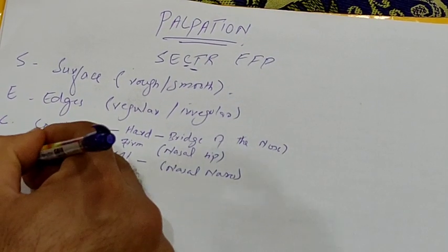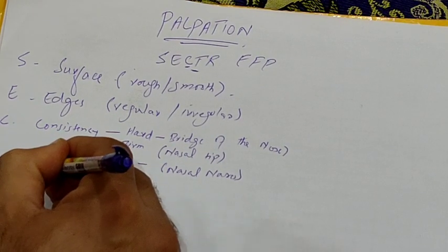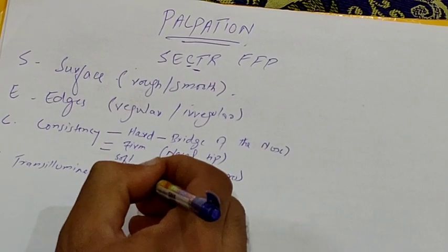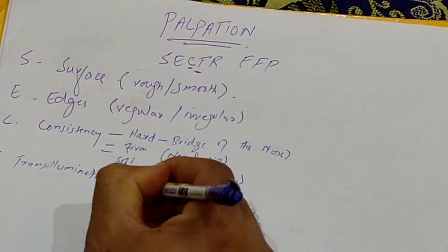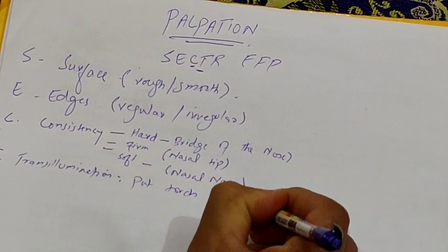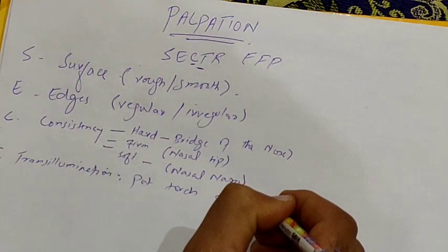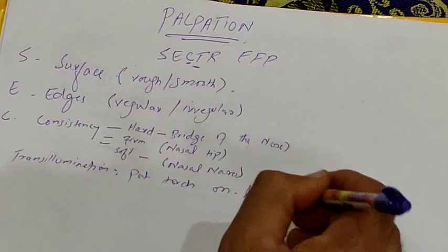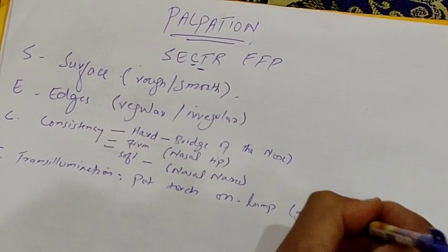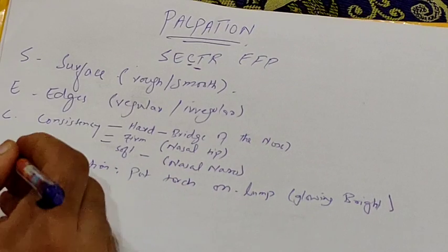T stands for trans-illuminable. This is simple — just put your torch on the lump and check whether it glows bright red. If it does, then it will be trans-illuminable.